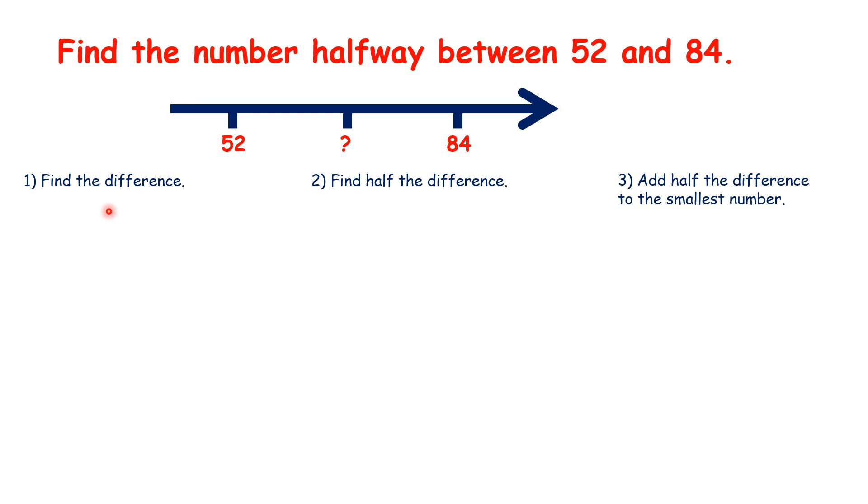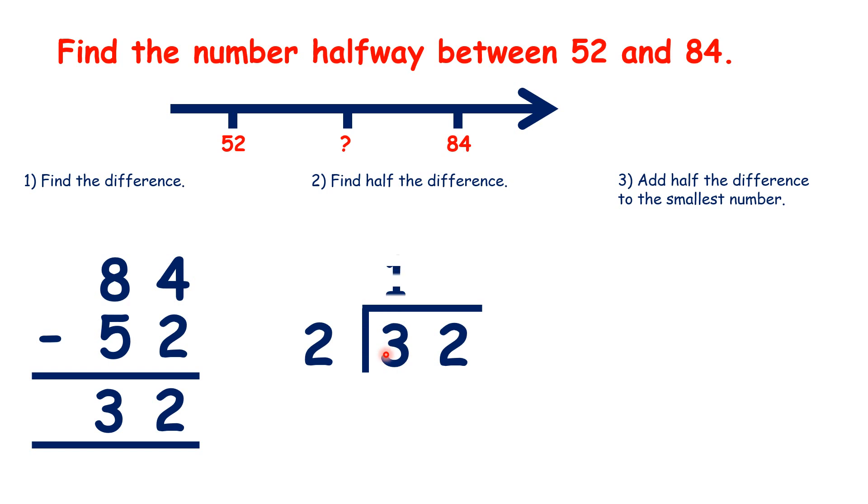So we find the difference, then we find half of the difference, then we add half of the difference to the smallest number.